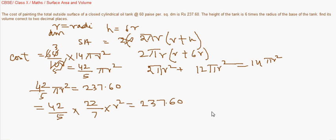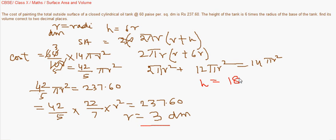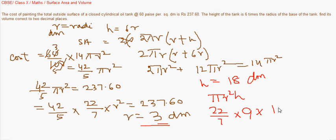Solving 42 by 5 into 22 by 7 into r squared equals 237.60, we get r equal to 3 decimeters. Since h equals 6r, h is 18 decimeters. The volume is pi r squared h, which is 22 by 7 into 9 into 18, giving 509.14 cubic decimeters. Hope you followed it. Thank you.